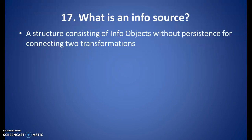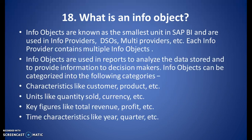What is an info source? An info source is a structure consisting of info objects without persistence, used for connecting two transformations.